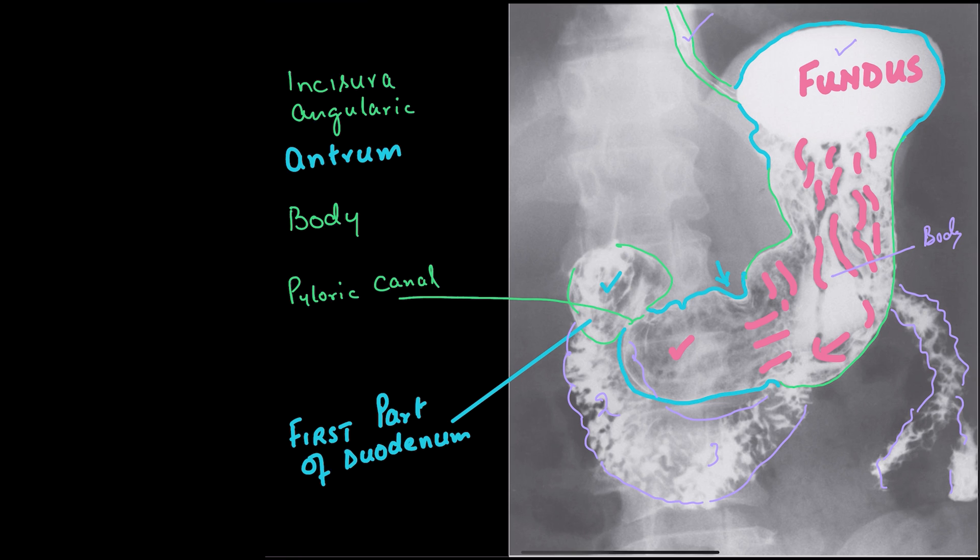The fourth part is behind this body. Because of this abundance of the contrast material, you cannot see that. Then you can see the duodenum becomes the jejunum. The landmark where we can demarcate that duodenum is becoming jejunum, that flexure is being highlighted by a ligament and that is known as the ligament of Treitz.